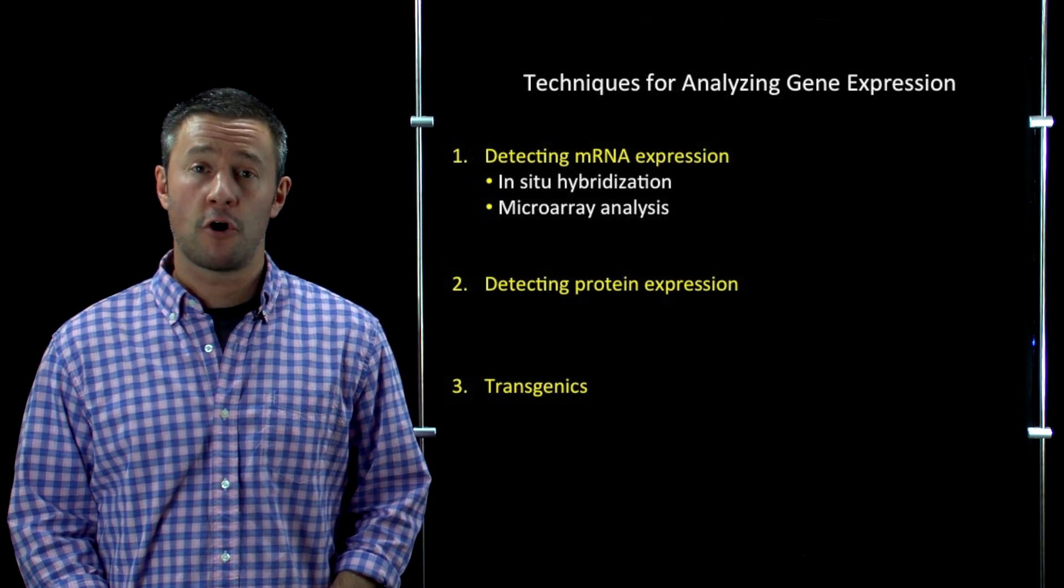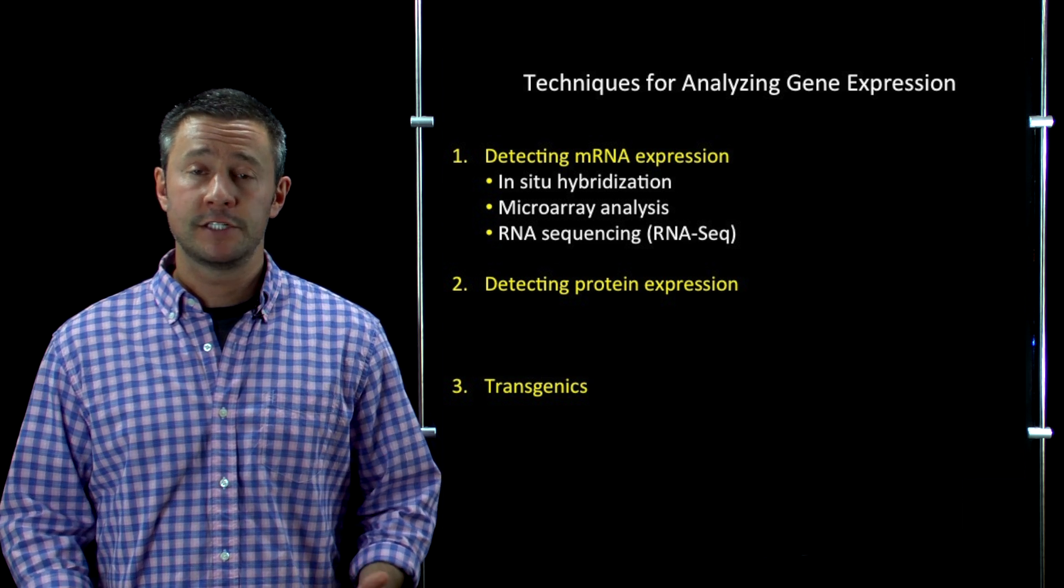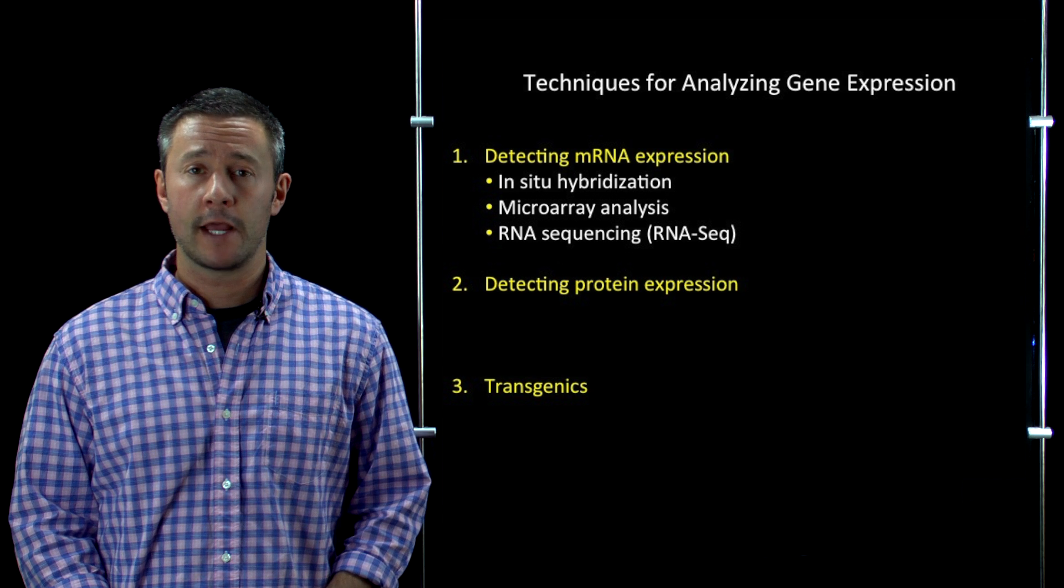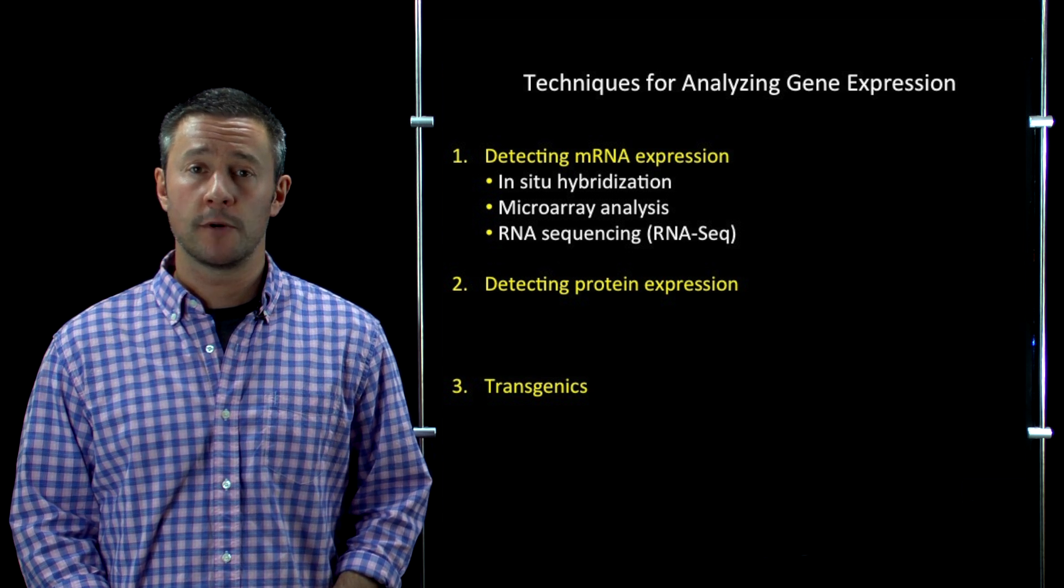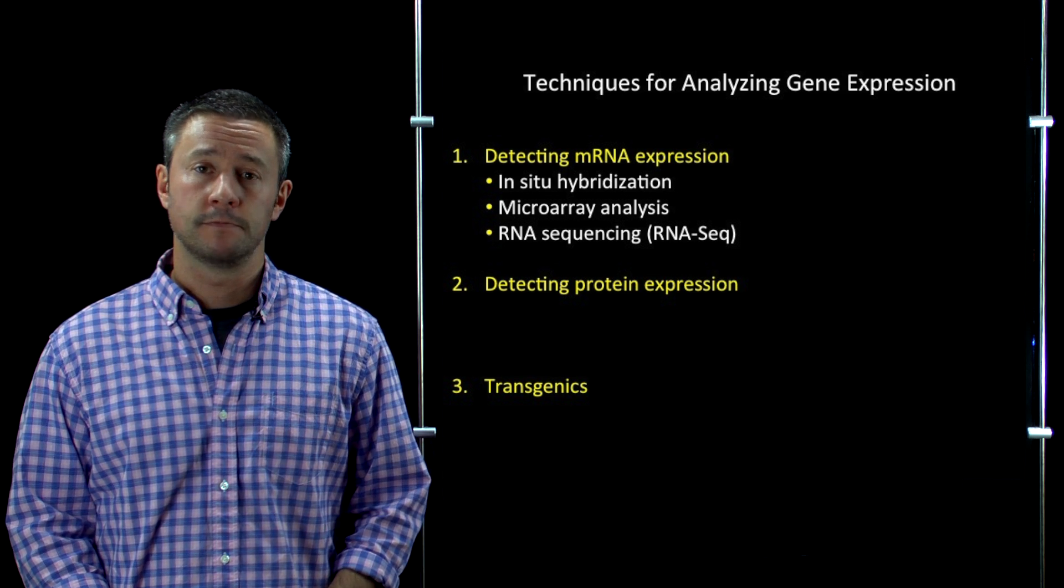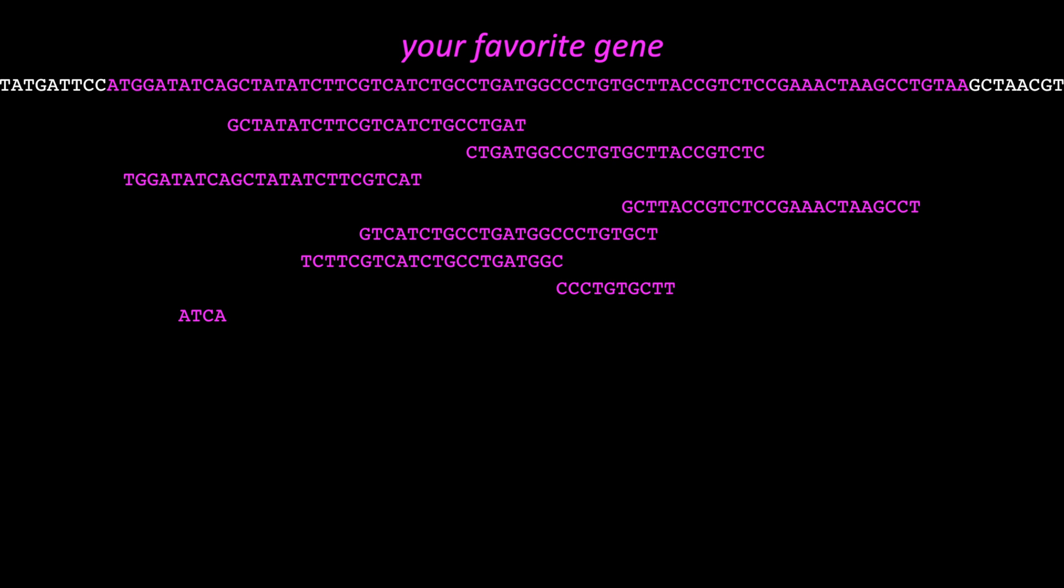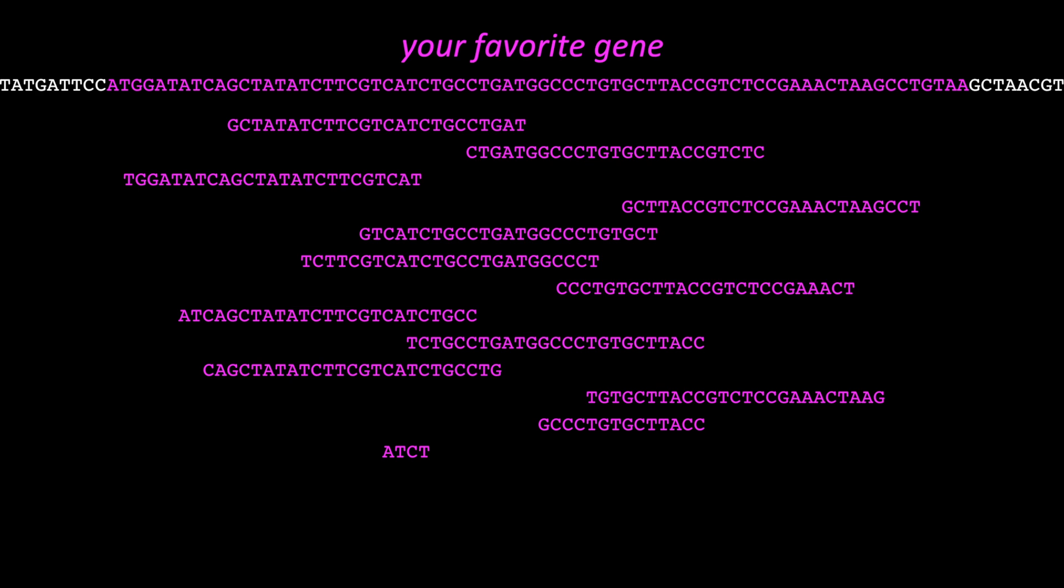There's also another way to do this called RNA sequencing or RNA-seq for short. And this is a similar approach to microarray analysis in that it allows you to determine the expression levels for all genes in the genome at once. In this case, the technology used is high-throughput sequencing. And the basic idea is that the more times you obtain sequences corresponding to a particular mRNA in a given sample, the more highly that gene is expressed. Again, we'll leave the details for another video.